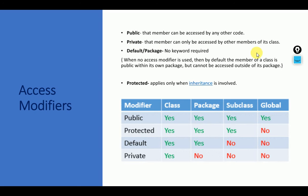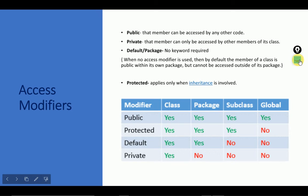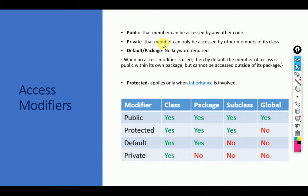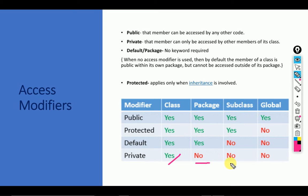In the private access modifier, the member can only be accessed by other members of its own class. The private member can be accessed by other members of the same class only. Within the class, the data member or data variable can be accessed — not accessed by another package, not by another class in the same package, not by a subclass, and not globally.